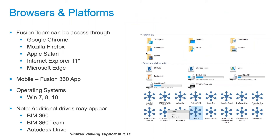Fusion Team works on all modern browsers, although Internet Explorer 11 may have limited viewing support as it is on its way out. It also runs on mobile very nicely, so if you have a tablet or phone you can see the data without having to fire up a laptop — it works across all the latest operating systems. As you sign up and enable it, you might actually have access to more hubs than you know. For instance, this screen cap shows access to BIM 360 Docs, Team, Autodesk Drive, and Fusion Team — all accessible from your desktop.